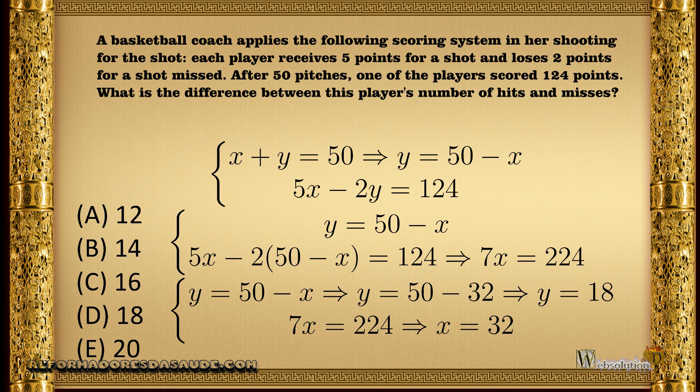So we have x plus y, the number of shots, and we know the number of shots is 50. Let's say x is the shots worth 5 points, and y is the shots that lose 2 points.